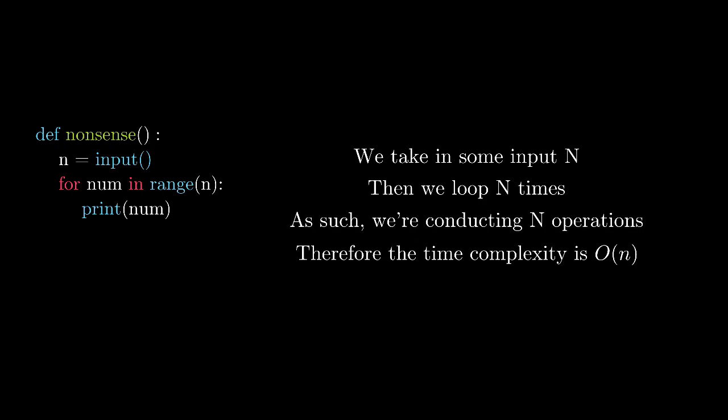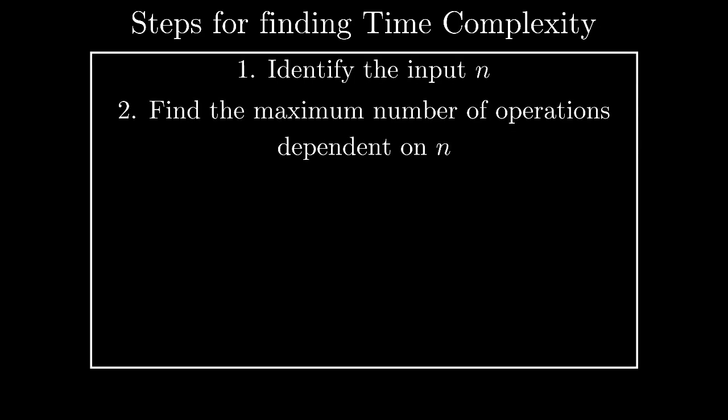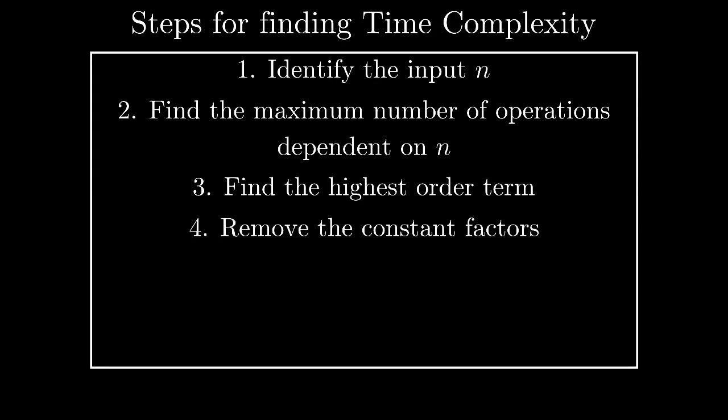So let's move on to actually talking about how to find time complexities in the first place. I have a few steps to do so. First, you want to identify the input n that the program is using. Then you want to find the maximum number of operations in the program that are dependent on your input n. Then you want to find the highest order term in this polynomial of operations. In the last case, it was just plain old n. You want to remove the constant factors because we don't really care about that. At that moment, you'll be left with whatever your time complexity is for big O of n.